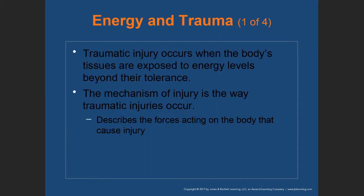Energy and trauma: Traumatic injury occurs when the body's tissues are exposed to more energy than they can tolerate. The mechanism of injury describes forces acting on the body that cause injury. When force is applied to the body and the body is able to tolerate or dissipate that force, there is no injury. But if the force becomes concentrated and is not tolerated by the body, it results in soft tissue injuries.